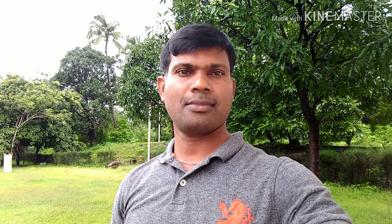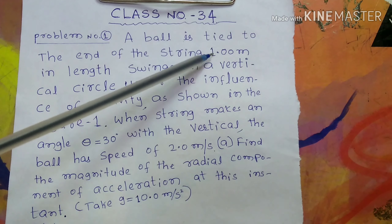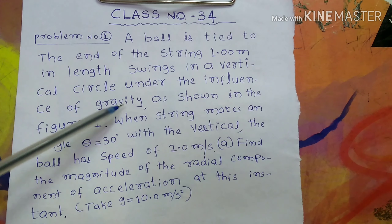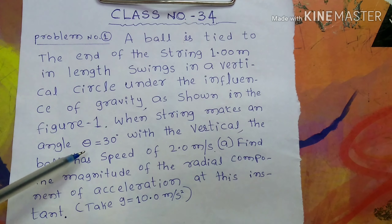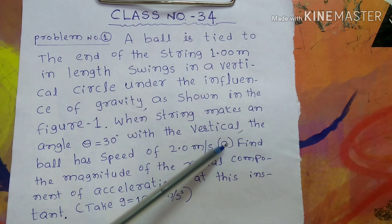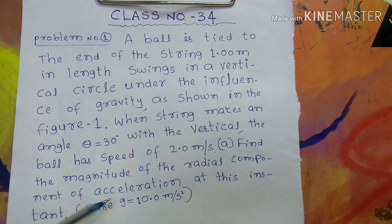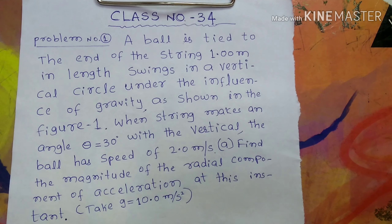This is class number 34, problem number one. A ball is tied to the end of a string one meter in length and swings in a vertical circle under the influence of gravity as shown in the figure. When the string makes an angle theta equal to 30 degrees with the vertical, the ball has a speed of 2 meters per second. Question A: find the magnitude of the radial component of acceleration at this instant. Take g equal to 10 meters per second squared.